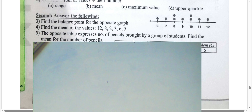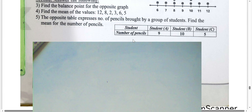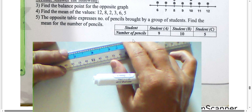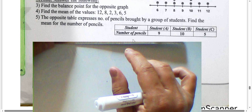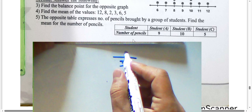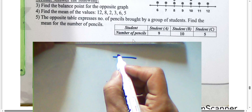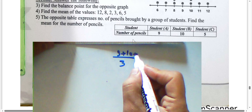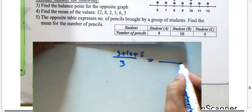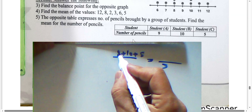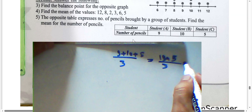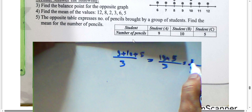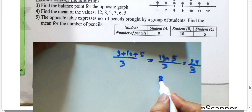Next question: a table expresses the number of pencils. Collect together and divide by the number of sets — we have three sets: nine plus ten is nineteen, plus five is twenty-four. Twenty-four divided by three equals eight. The result is eight.